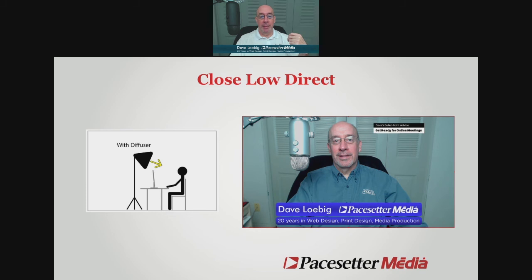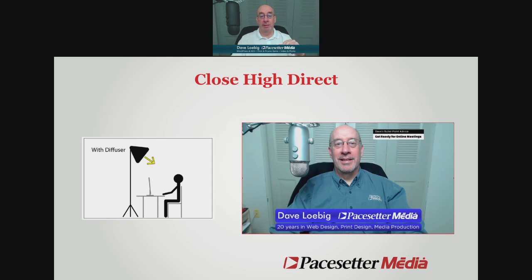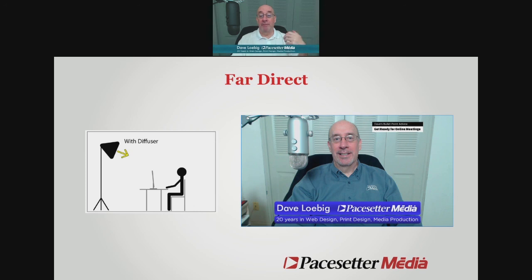Here the light source is right in front but pretty close, making it a relatively harsh light. The light source is smaller relative to my size, so it creates sharper shadows. Close and high again gives a smaller light source that creates more shadows. Finally, far and direct — it looks a little better, but as the light source gets further away it's relatively smaller compared to me, which also makes for sharper shadows.